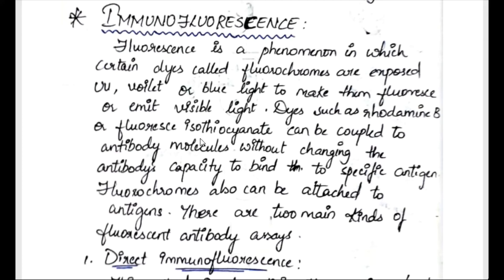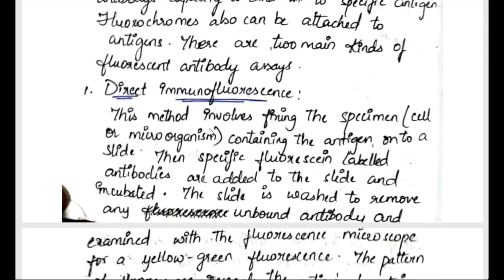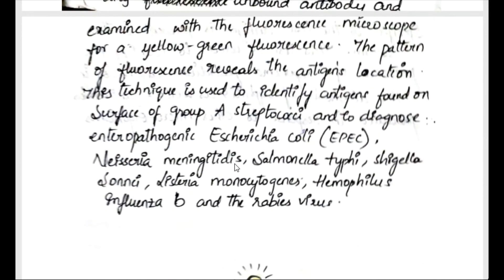Dyes such as rhodamine B or fluorescein isothiocyanate can be coupled to antibody molecules without changing the antibody's capacity to bind to a specific antigen — that is the main criteria. Fluorochromes can also be attached to antigen, depending on what we want to identify. There are two main kinds of fluorescent antibody assays: direct immunofluorescence and indirect immunofluorescence.